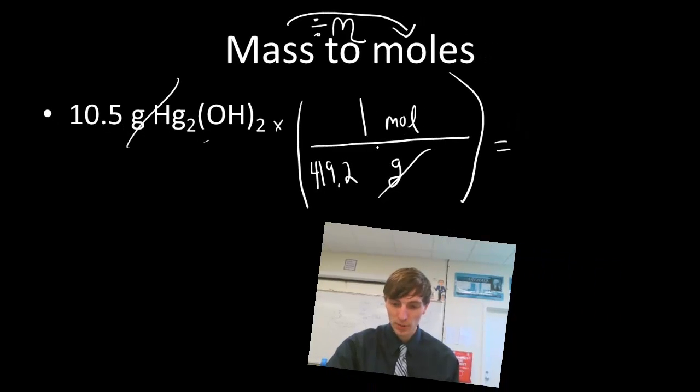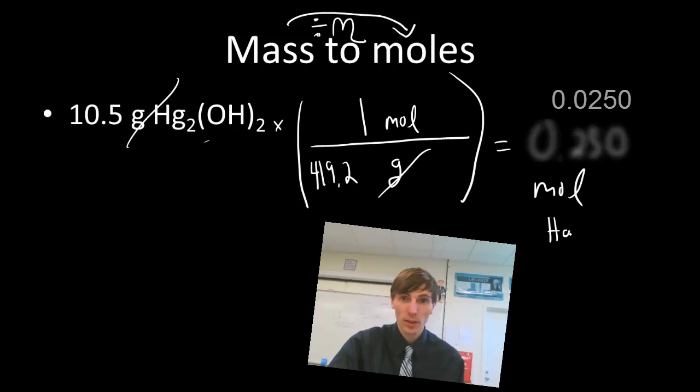And we're left with dividing by. So I divide that out. 10.5 divided by 419. I'm going to go ahead and punch this in. 10.5 divided by 419.2. And now I'm going to get an answer of 0.250. We're out of the 3 sig figs. 0.250 moles of Hg2OH2.